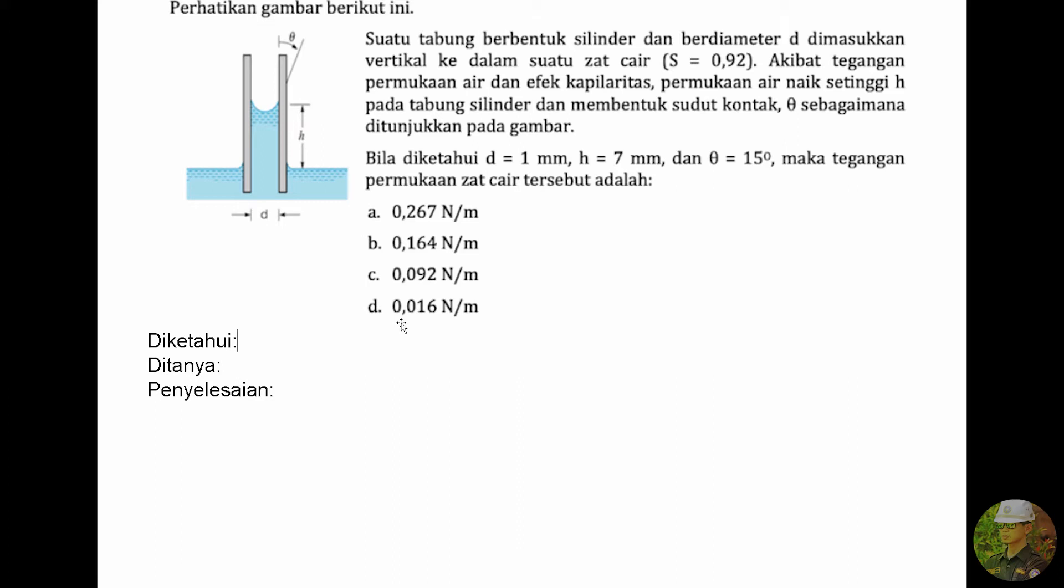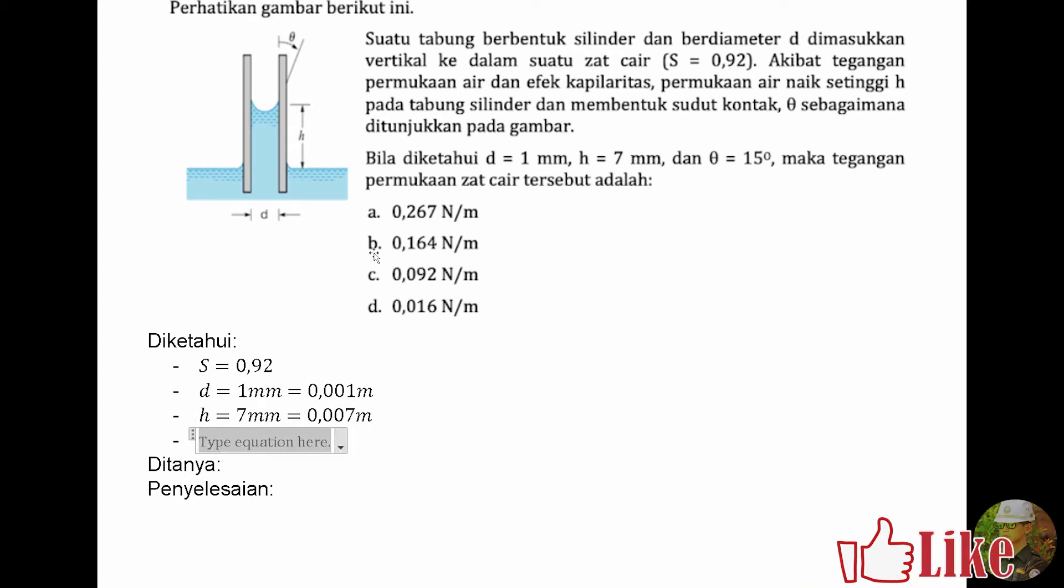Langkah pertama, kita menuliskan hal yang diketahui. S zat cair sebesar 0,92. D sebesar 1 mm, ini kalau dirubah ke meter dibagi 1000 adalah 0,001 meter. H nya sebesar 7 mm, kalau dirubah ke meter maka hasilnya adalah dibagi 1000, 0,007 meter. Dan yang terakhir diketahui adalah sudut kontak theta sebesar 15 derajat.